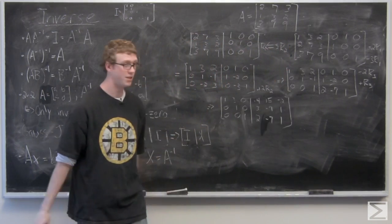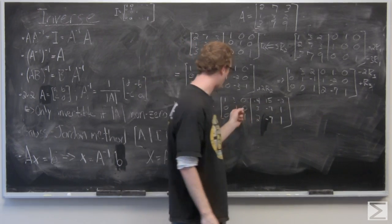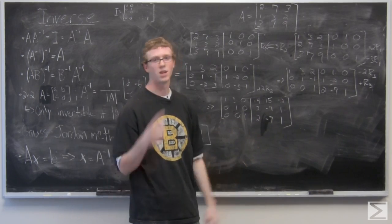Last, all we need to do is subtract three of R2 from R1 to get the left side to be the identity matrix, and the right side is going to be our resultant inverse.